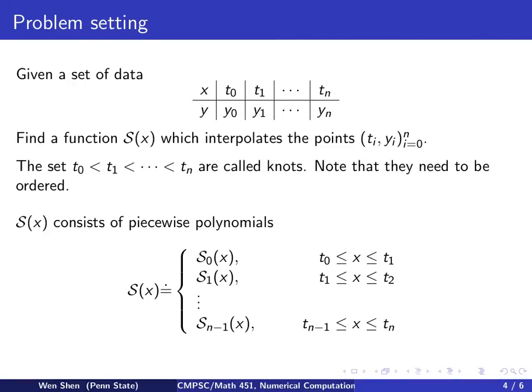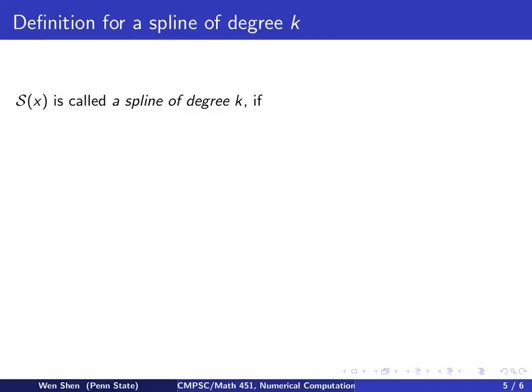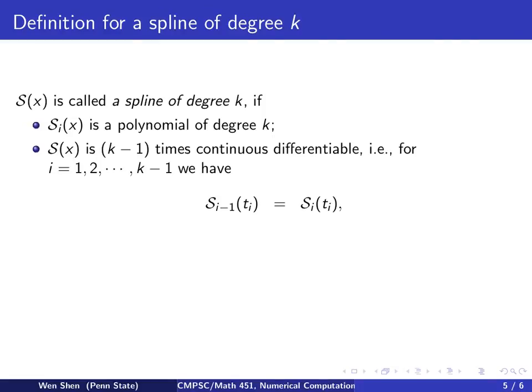The spline function is piecewise defined, where each Sᵢ is a polynomial that satisfies further conditions. Here is the formal definition: S(x) is called a spline of degree k if the following are satisfied. First, each Sᵢ is a polynomial of degree at most k.